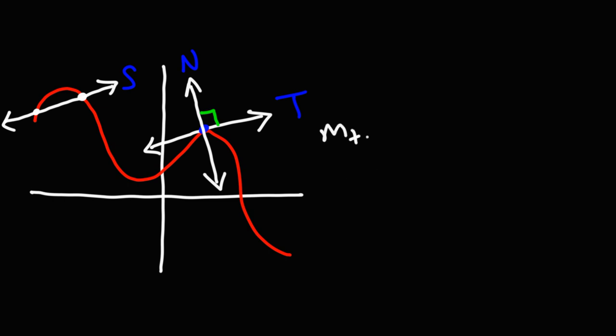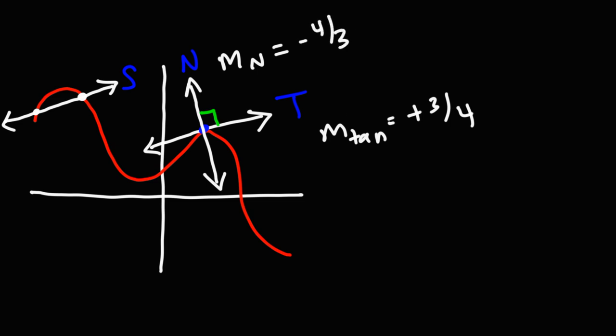The slope of the tangent line — let's assume it's, in this example, positive three over four. The slope of the normal line is going to be the negative reciprocal of the slope of the tangent line. So if the slope of the tangent line is positive three over four, the slope of the normal line is negative four over three.